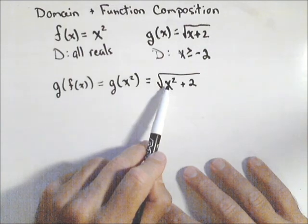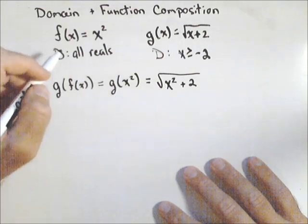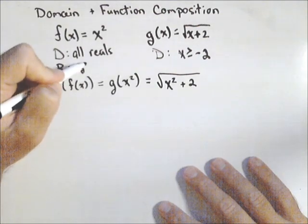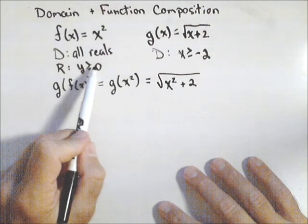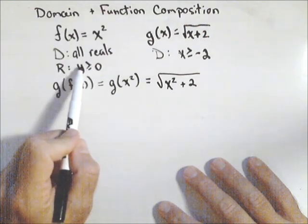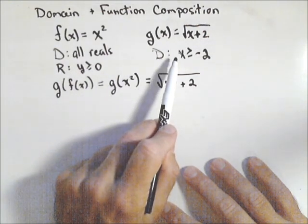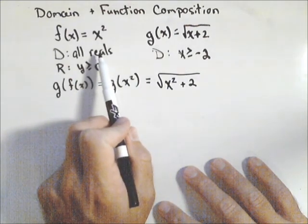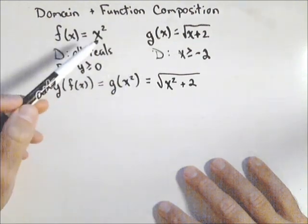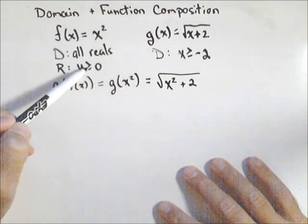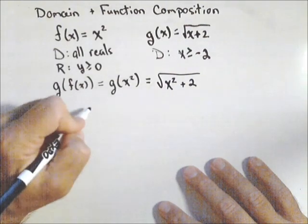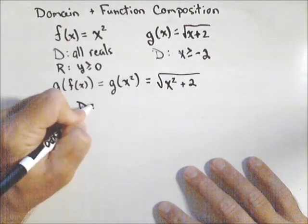Now, we need to think about the range of f. Because f was x squared, its range was all y values greater than or equal to zero. The range of f is encompassed by the domain of g. So that means the domain of f is plenty for the domain of our composition. Because we know we're not going to get anything smaller than zero out from f, so we're not going to be putting anything smaller than zero into g, which is okay. So our domain here is going to be all reals.